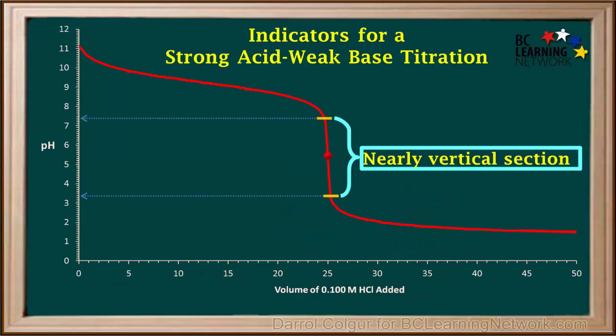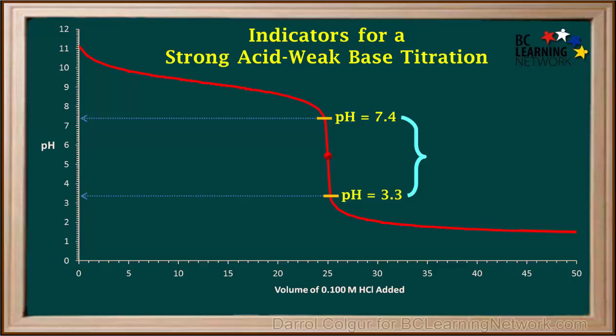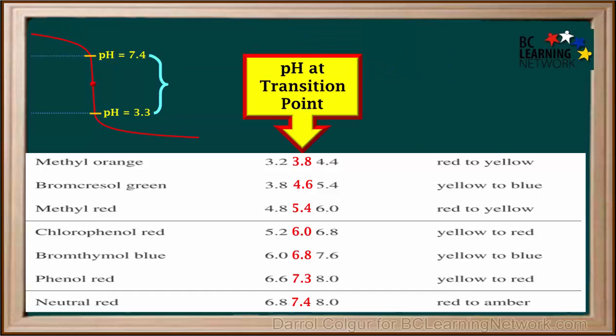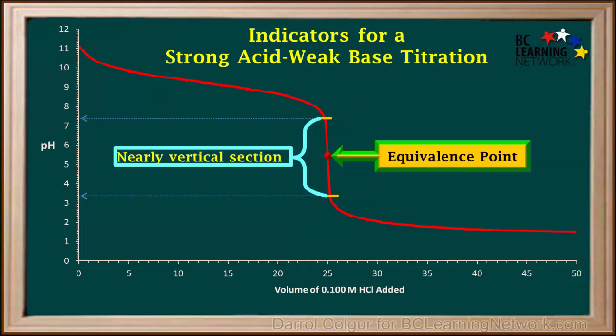Even though methyl red is the best indicator for this titration, any indicator which changes color on the nearly vertical section of this graph would work very well. That would include any indicator with a transition point pH somewhere between 3.3 and 7.4. The indicators on the table from methyl orange all the way down to neutral red have a transition point pH between 3.3 and 7.4, so any of these would be suitable for this titration. Be aware that both the pH at the equivalence point and the location and length of the nearly vertical section of the graph depend on the particular weak base and strong acid pair being used — the graph for each pair of reactants is unique.